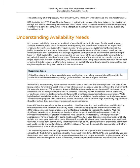Within AWS, we commonly divide services into the data plane and the control plane. The data plane is responsible for delivering real-time service while control planes are used to configure the environment. For example, Amazon EC2 instances, Amazon RDS databases, and Amazon DynamoDB table read/write operations are all data plane operations. In contrast, launching new EC2 instances or RDS databases, or adding or changing table metadata in DynamoDB are control plane operations. While high levels of availability are important for all these capabilities, data planes typically have higher availability design goals than control planes. Workloads with high availability requirements should avoid run-time dependency on control plane operations.